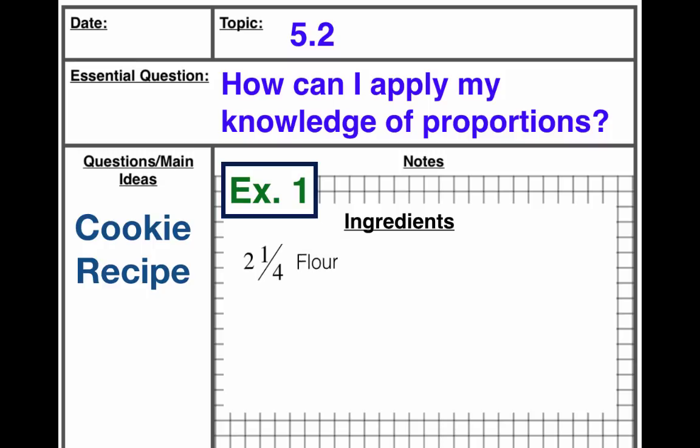We're going to make a little list in our notes. The first ingredient is flour — specifically, two and one-fourth cups of flour. Another thing you need is three-fourths cup of sugar. So we have two and one-fourth cups flour and three-fourths cup sugar.